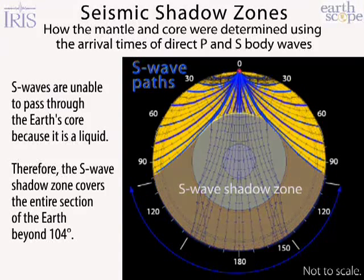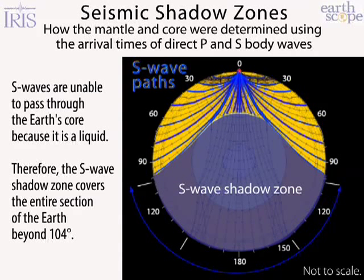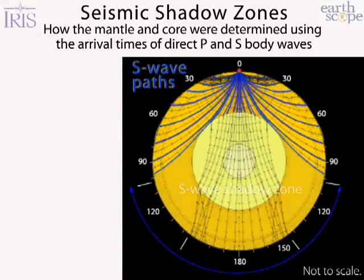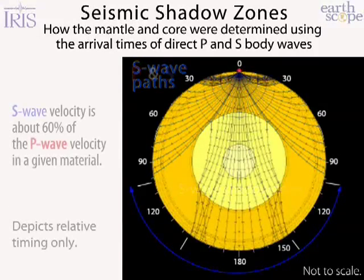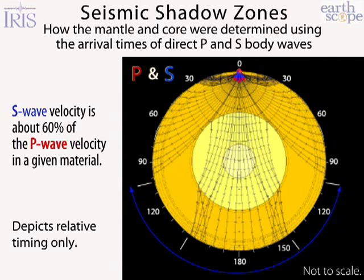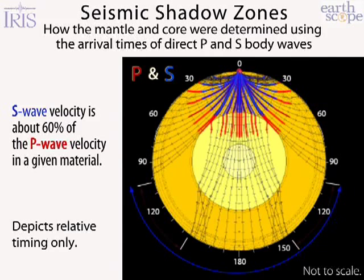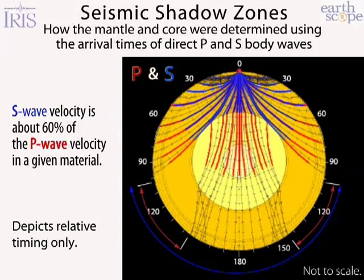It was this lack of S wave arrivals and recognition of the slowing of the P wave velocity that caught the attention of seismologists in 1910. By understanding how energy is refracted by different materials and pressures, it enabled them to deduce a liquid outer core. By 1913 the P wave shadow zone between 104 and 140 degrees was refined to define the core-mantle boundary.